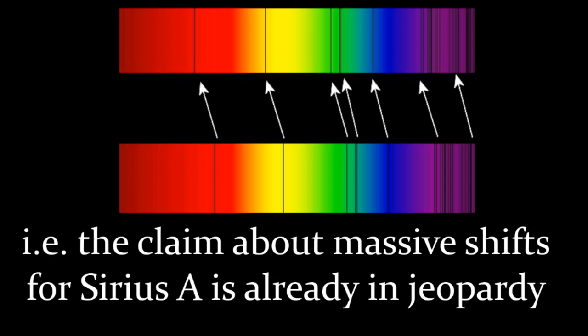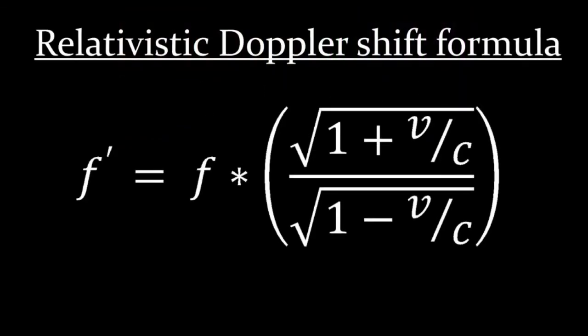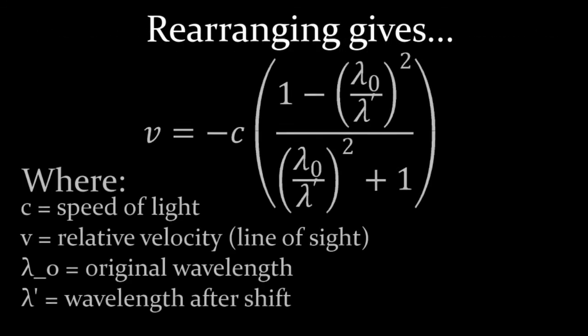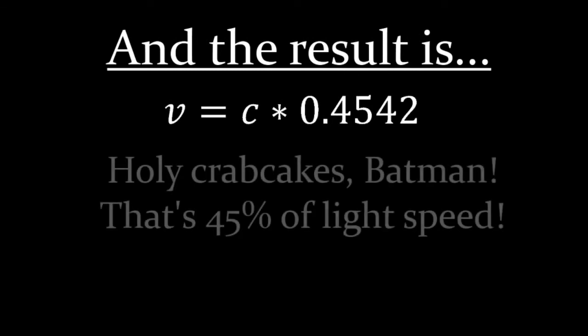What velocity relative to us is this? That can be calculated using the relativistic Doppler effect formula. This can be rearranged to give this. Now we can sub in the numbers. The original wavelength over the new wavelength squared gives 0.3753, which can be substituted in, giving a result of V equals C times 0.4542, or thereabouts.